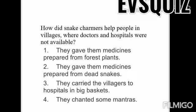Next question: 'How did snake charmers help people in villages where doctors and hospitals were not available?' Option one: they give them medicines prepared from forest plants. Option two: they give them medicine prepared from dead snakes. Option three: they carried the villagers to hospital in a big basket. Option four: they chanted some mantras. What will be the answer students? Start thinking.